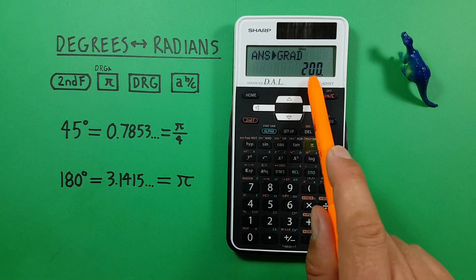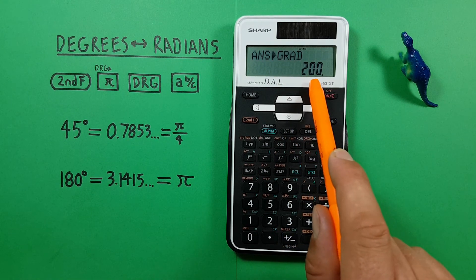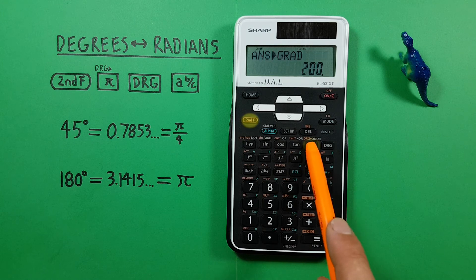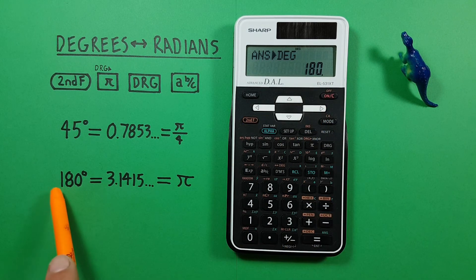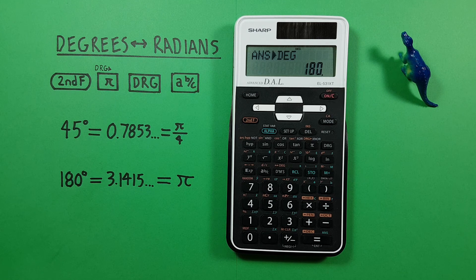And we see that's equal to 200 gradians. And if we do it again, we see we get 180 degrees, which we already know. All right. I hope this helps. And good luck on those tests out there, everybody.